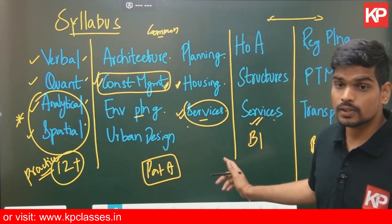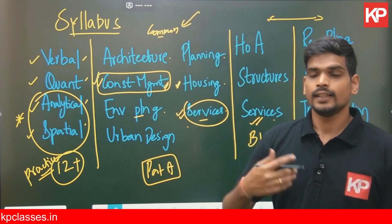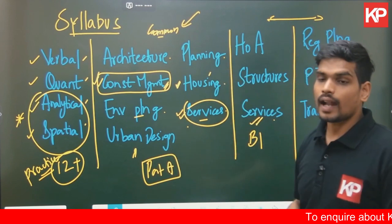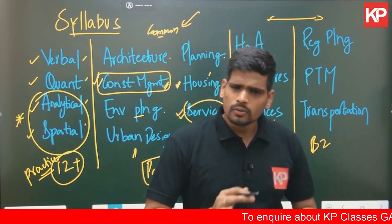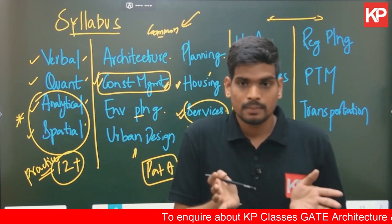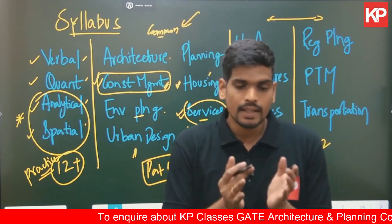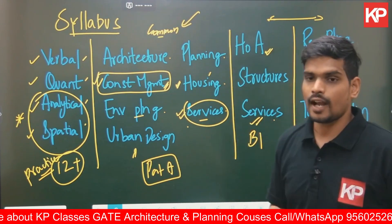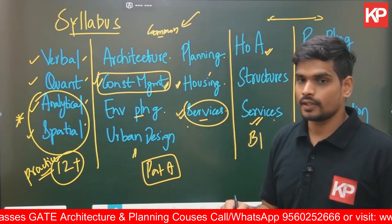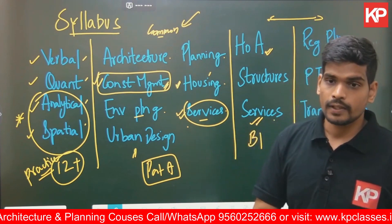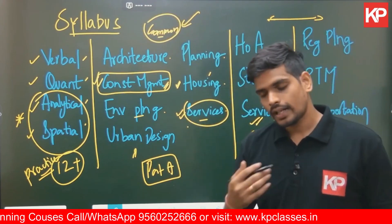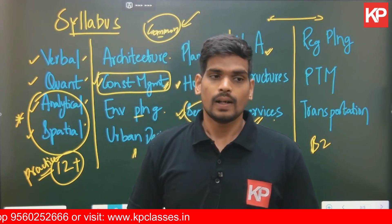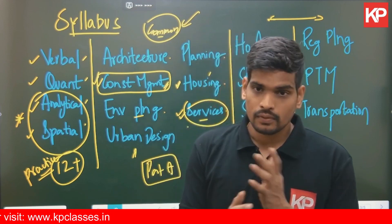There are also reverse deviations — for example, a valuation question, which actually falls under the common part housing section, was asked in Part B2. There is always about a five percent deviation in the question paper where questions from Part B appear in the common part and vice versa. Even contemporary architecture, mentioned in the architecture part, had a two-mark question asked in the common part in both GATE 2023 and GATE 2022. Because of these deviations, we recommend a holistic approach and covering the syllabus as comprehensively as possible.